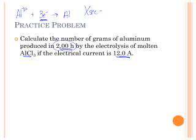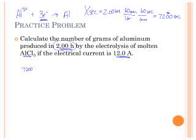We know that there are 7,200 seconds. And we ran that current first. It was a 12 amp current. So now we have Coulombs.